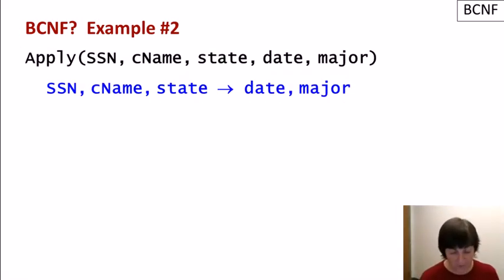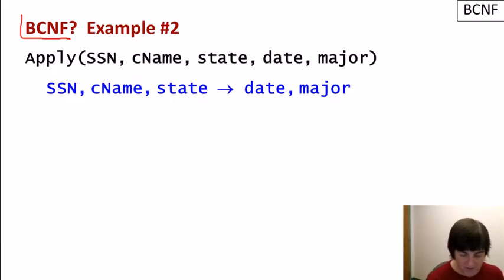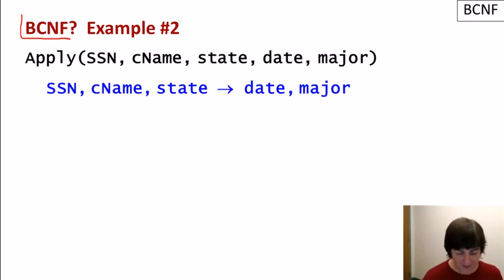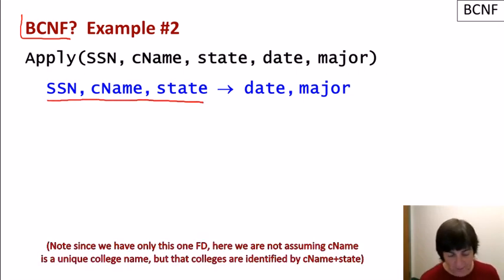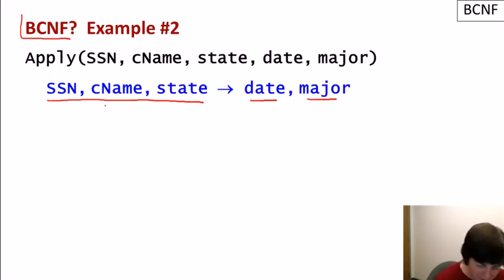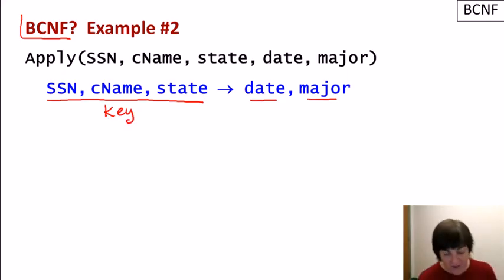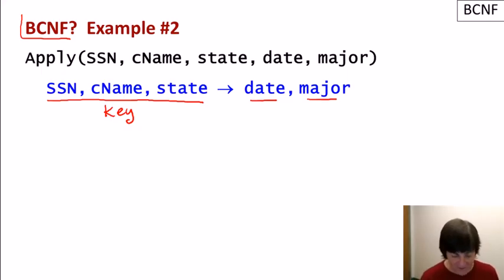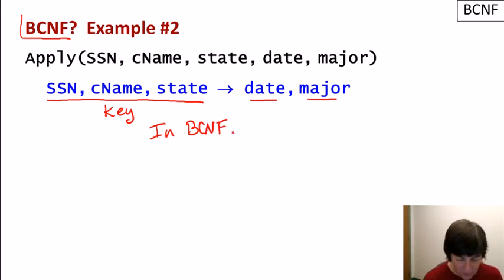Now the apply relation with attributes SSN, college, state, date, and major has one functional dependency: SSN and college determine date and major, meaning each student may apply to each college only once and for one major. SSN and college form a key since they determine all other attributes. Our only functional dependency has a key on its left-hand side, so this relation is already in Boyce-Codd normal form and cannot be decomposed further into a better design.